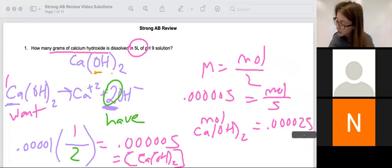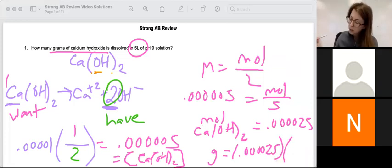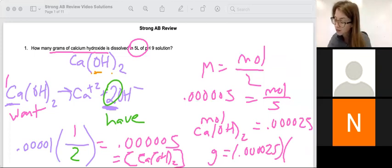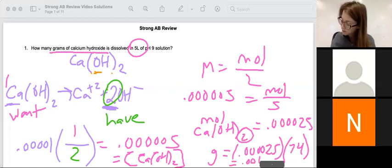If I want grams of calcium hydroxide, I need to use my moles of calcium hydroxide and my molecular weight. Molecular weight is 40 plus 2 times 16 plus 2 times 1. So my molecular weight is 74. If you're getting 50 something, it's because you're forgetting about that 2 distributing to the oxygen as well. And that should get us the correct answer of 0.00185 grams.